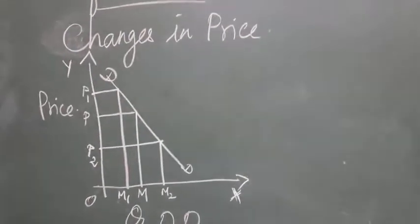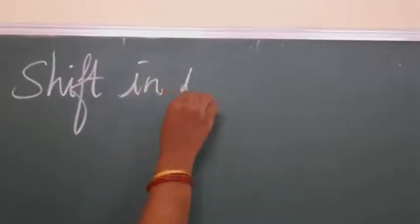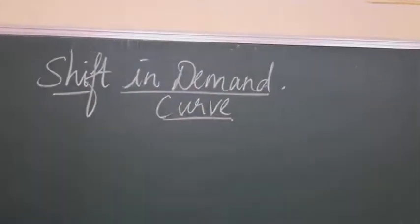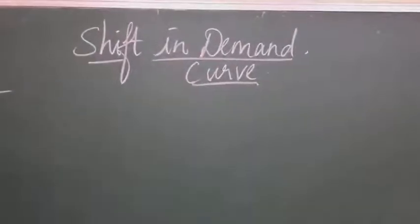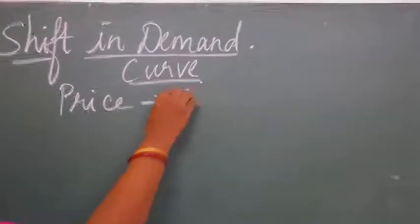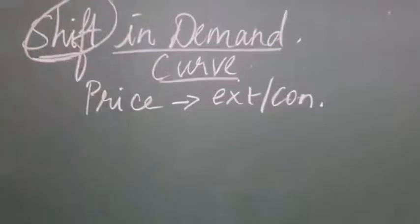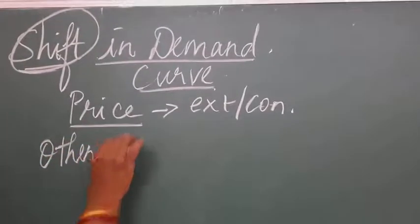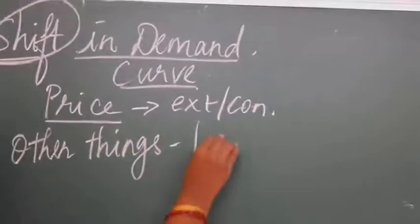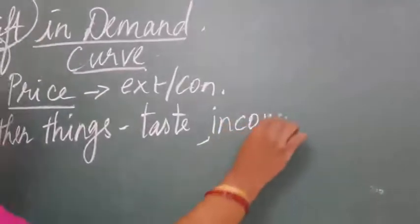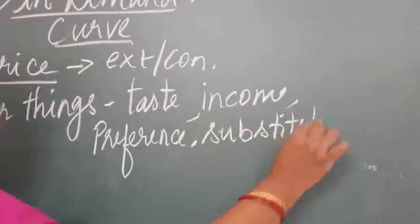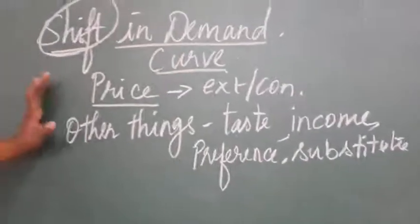Now let us see shifting demand. In extension or contraction, we said that only because of changes in price, extension or contraction happens. But here, the shift happens not because of price, but because of other things — income, preference, rate of substitute goods — all these are called other things which bring changes in demand.